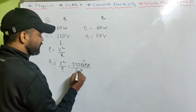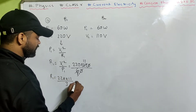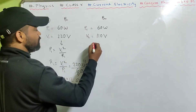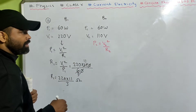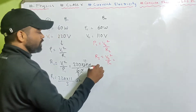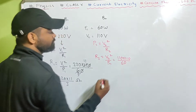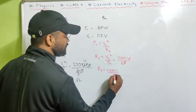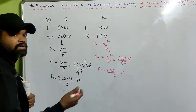R1 simplifies to 220 into 11 by 3. In the second case, R2 equals V2 squared by P2, which is 110 into 110 by 60. R2 simplifies to 110 into 11 by 6. They've asked for the ratio R1 to R2.